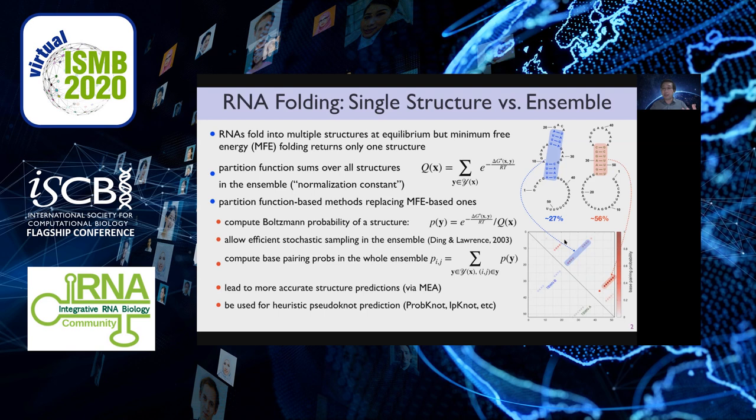This summation is over exponentially many alternatives as well. We can see on the base pairing probability matrix on the right hand side that the red pairs, which correspond to the right structure, are indeed more probable than the pairs in blue. With these base pairing probabilities P(i,j) matrix, we can have more accurate structure predictions via the MEA or maximum expected accuracy algorithm, and we can also derive heuristic algorithms for pseudoknot predictions.